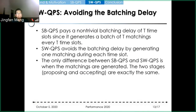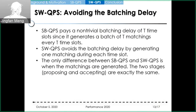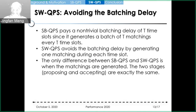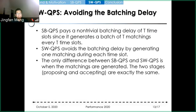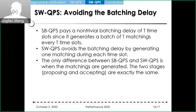Small-batch QPS achieves high throughput with small batch size, but it introduces a non-trivial batching delay of T time slots, since it generates a batch of T matchings every T time slots. So we designed sliding-window QPS to avoid this batching delay by generating one matching during each time slot. This is the only difference between small-batch QPS and sliding-window QPS; the proposing and accepting stages are exactly the same.